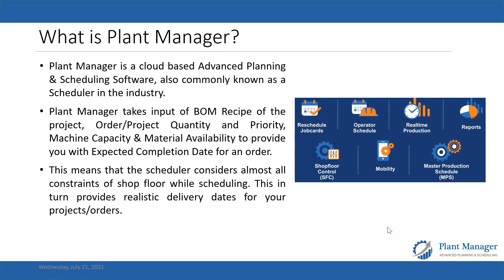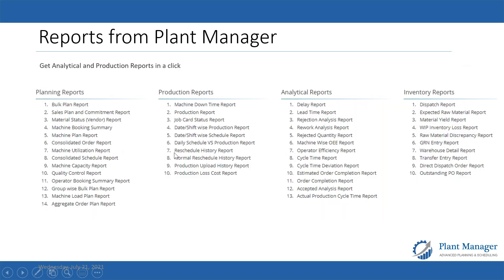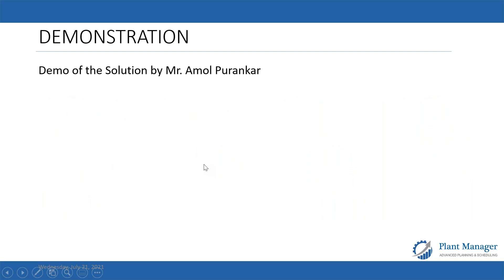There will still be changes after the plan is done — priority changes, urgent orders, rescheduling. But if you reschedule, the impact on a particular order's completion date is visible immediately. You can decide whether it's okay, and convey to the customer that there may be a delay of three or four days, or that the order will arrive earlier. Once you confirm this to the customer, your objective is achieved.